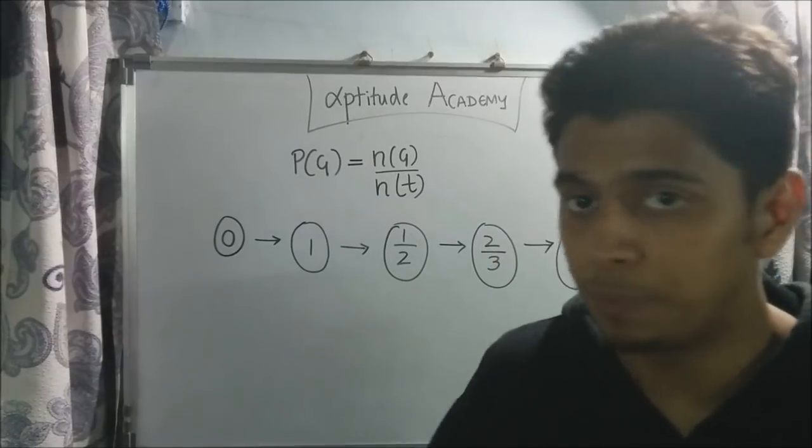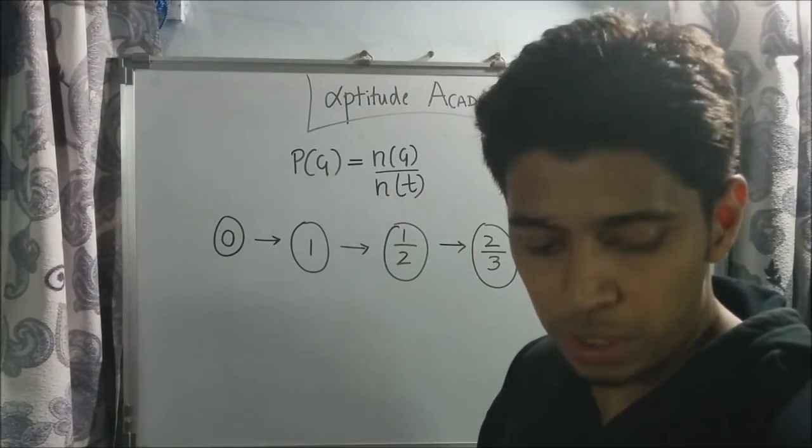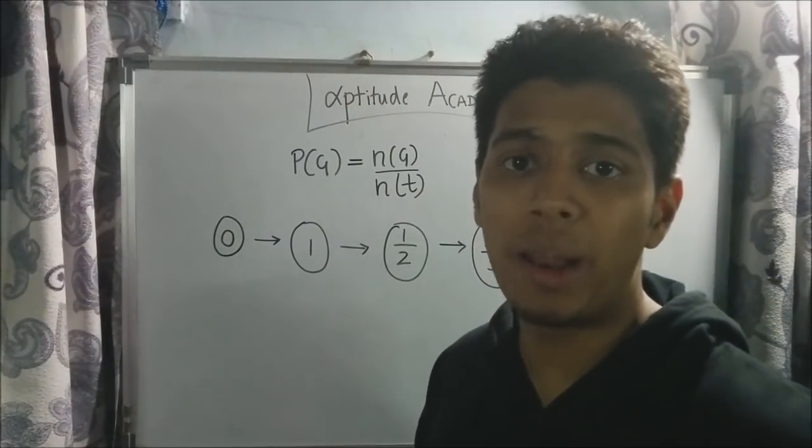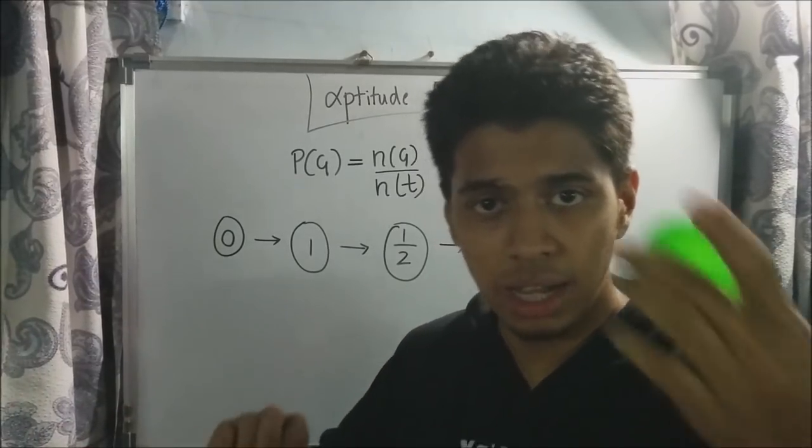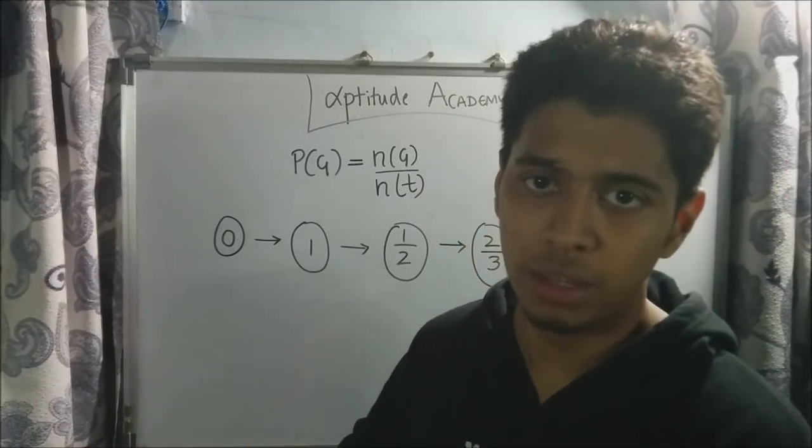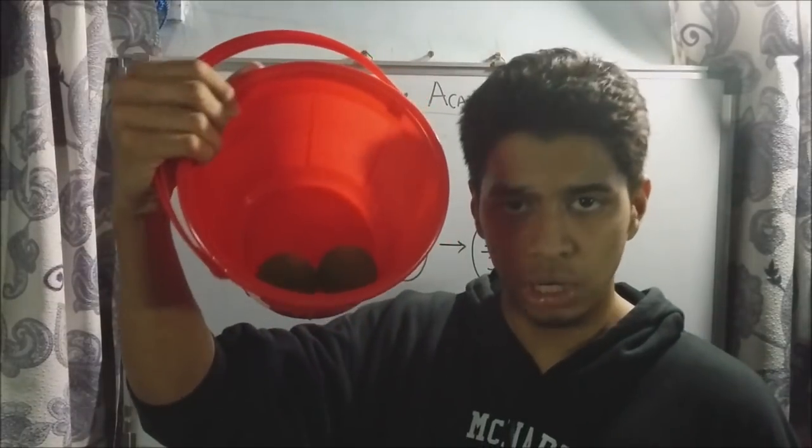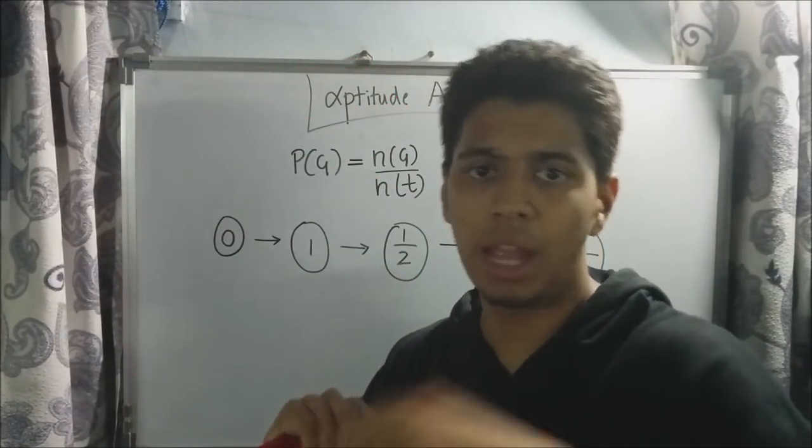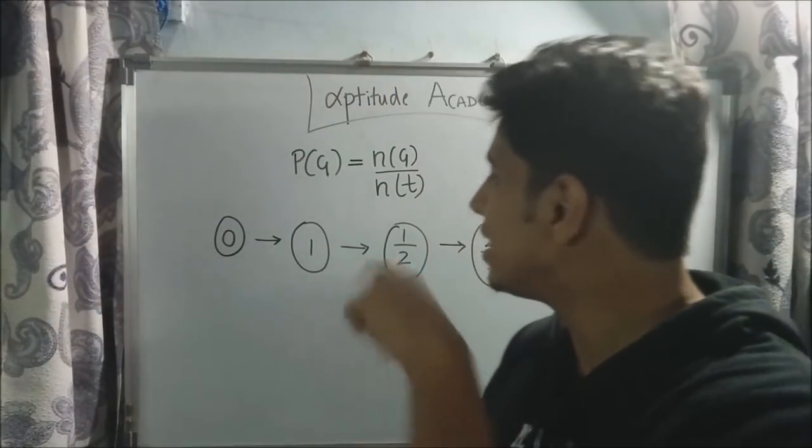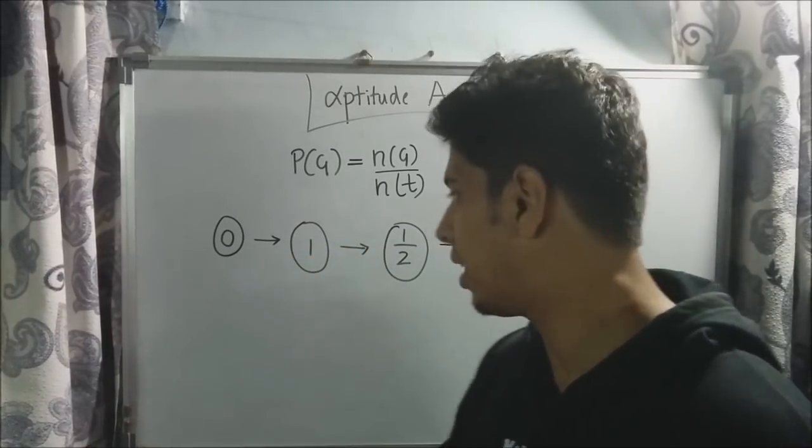Now P(G) equal to one. What is P(G) equal to one? P(G) equal to one is that whenever I pick up any ball, it will always be a green ball. So if I have added all green balls, whatever I pick up, it will always be a green ball. That means P(G) equal to one. It will always occur.